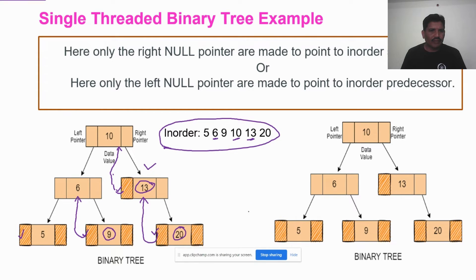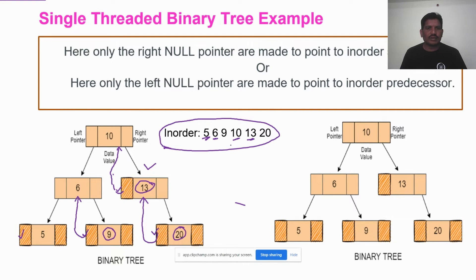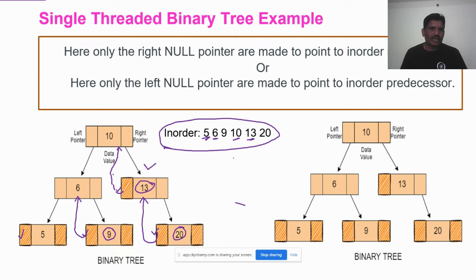For node 5, there is no inorder predecessor. In such cases, some authors say that if the node does not have an inorder predecessor, it will be connected to the root node. Another approach — how to connect that node to the other node — we will see in the next slide. This covers all left pointers connected to the inorder predecessor.